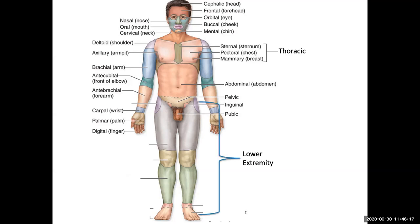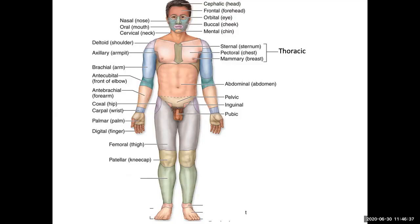We then get to the lower extremities. The lower extremity junctions to the torso at the coxal or hip. We then get to the thigh or femoral area, then the knee — and specifically the kneecap is referred to as the patella or patellar area. Then down into the leg we get the crural, which meets up with the tarsals to form the ankle. Then we get to the foot or pes — sometimes referred to as the ped — and finally the dorsum of the foot. Once again we have digitals or digits, which are the toes.